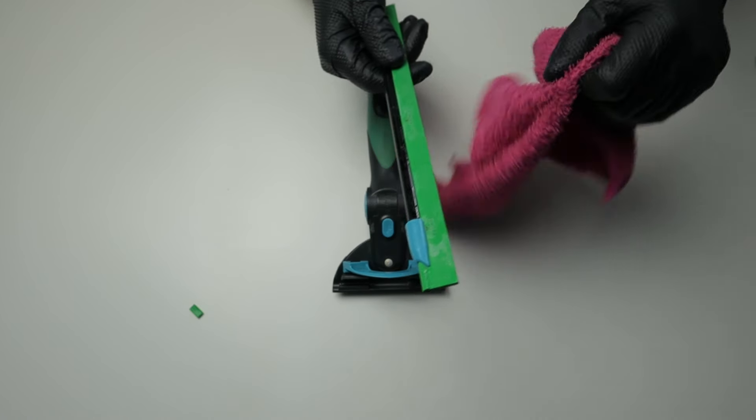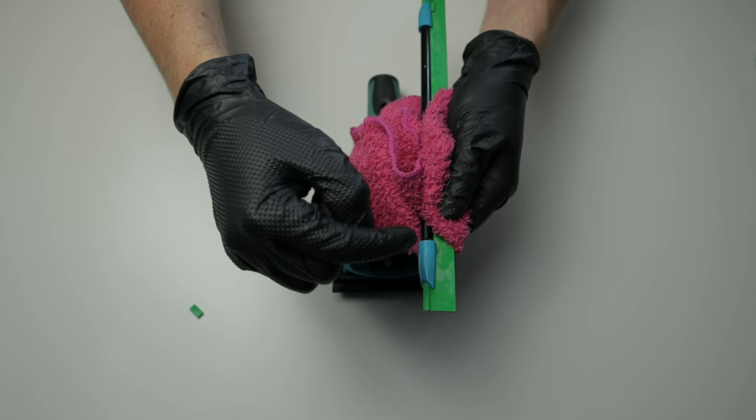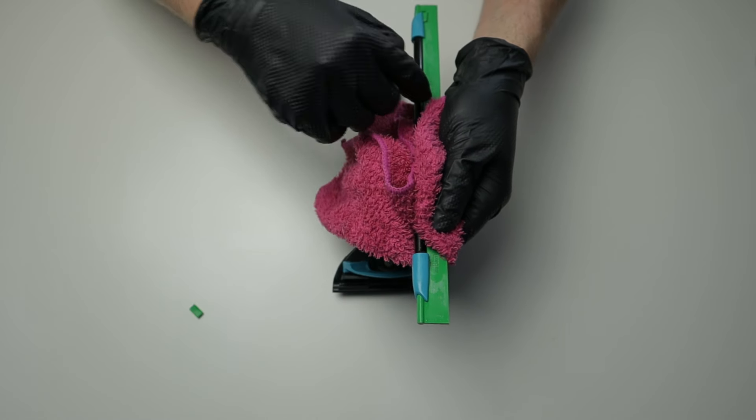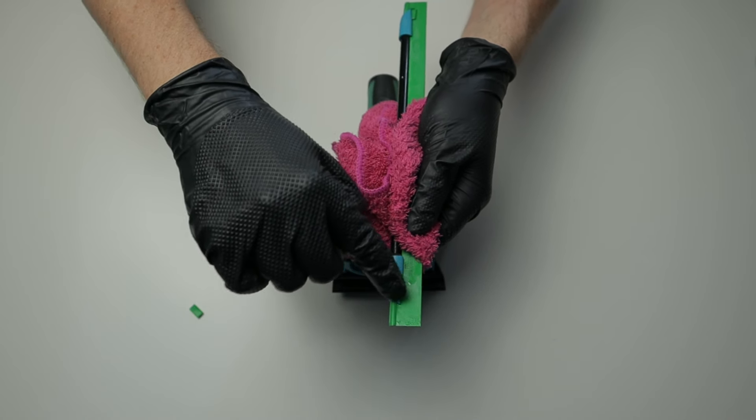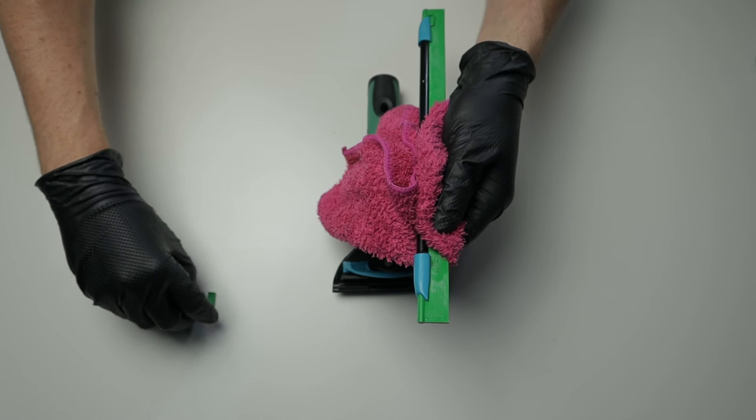Doing the same with the other side. Now, if you find the clips are a little bit tricky to get into the channel, you can use some of your detergent that you've just put in the channel. Put a little bit of detergent on the rubber here, and you will find the clip will go in much easier as well.